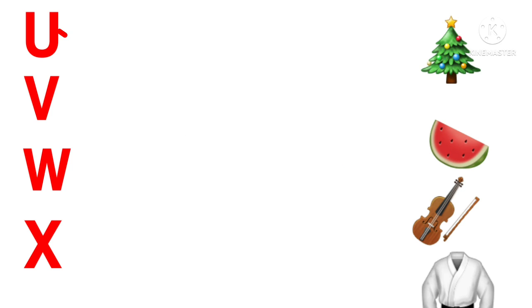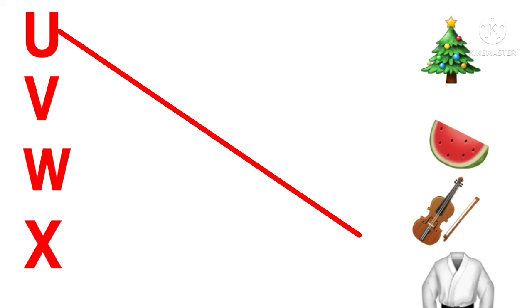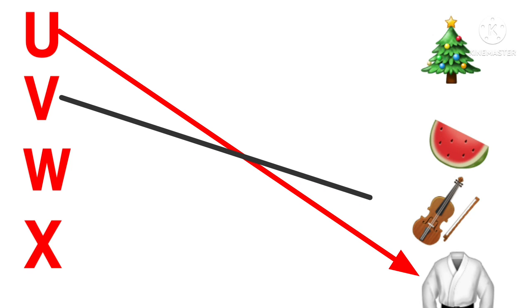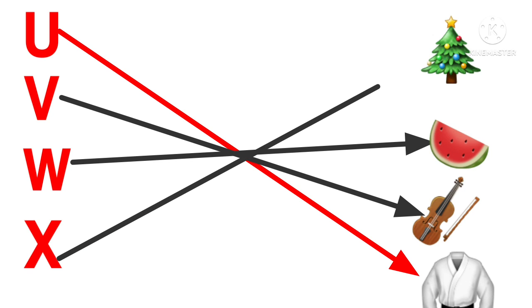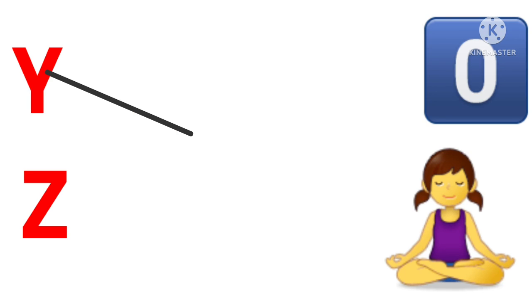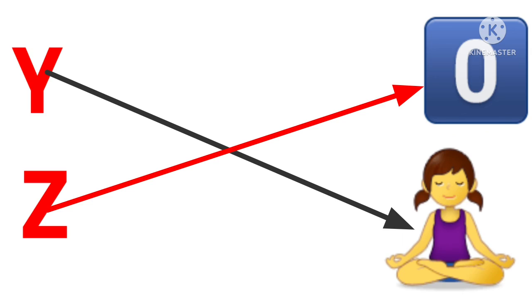T: Turtle. U: Uniform. V: Violin. W: Watermelon. X: X-mas. Y: Yoga. Z: Zero.